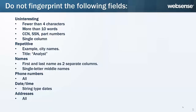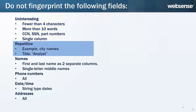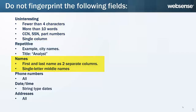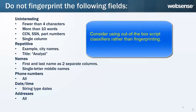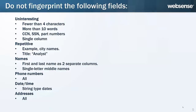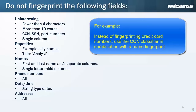In summary, avoid fingerprinting uninteresting, repetitive information as well as names, phone numbers, dates and time, and addresses. Depending on what you are trying to protect, sometimes it is better to use out-of-the-box script classifiers rather than fingerprinting. For example, instead of fingerprinting credit card numbers, use the CCN classifier in combination, perhaps, with a name fingerprint.